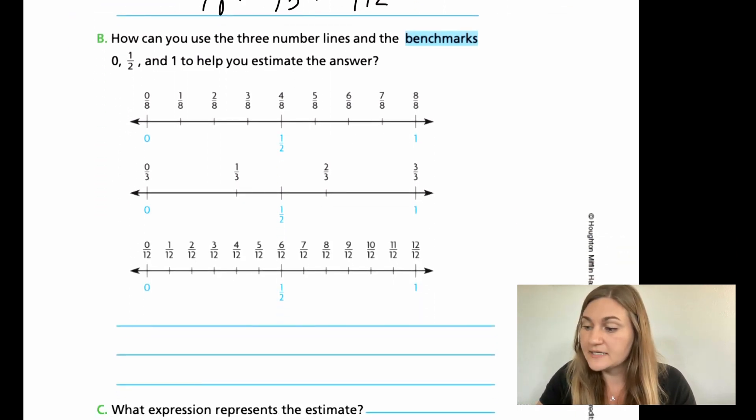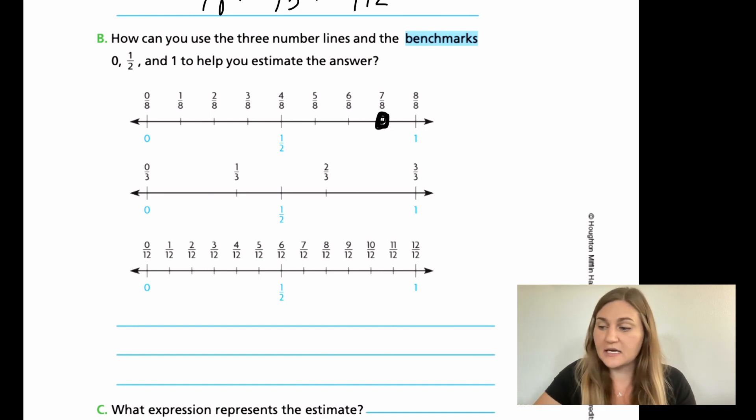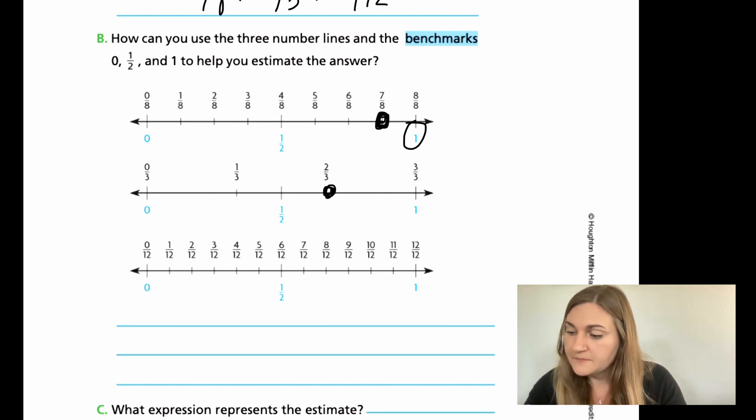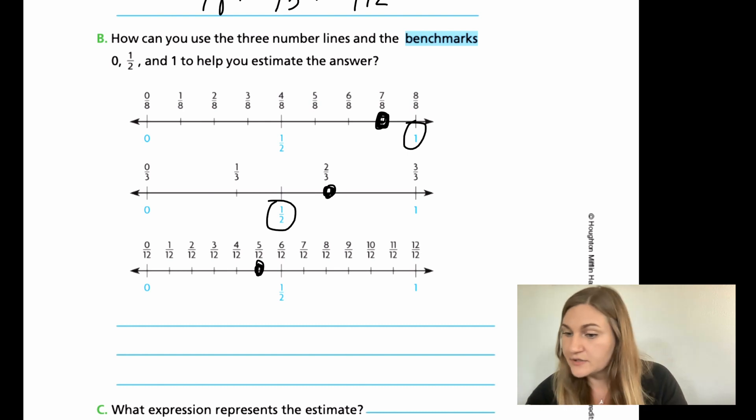Next, how can you use the three number lines and the benchmarks 0, 1/2, and 1 to help you estimate the answer? So the first one, 7/8, is going to be about here. Which benchmark is that closest to, a half or a 1? It's closer to 1, so I'm just going to circle that. For the second one, I have 2/3, which is here. Which one is that closer to, half or 1? It's just slightly closer to half. And then for my last one, my 5/12 here, it's in between 0 and half, but it is closer to half.